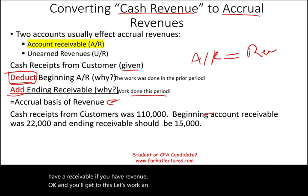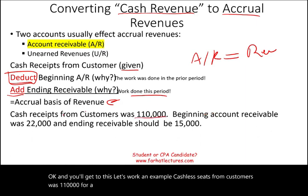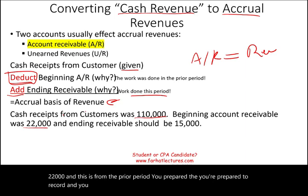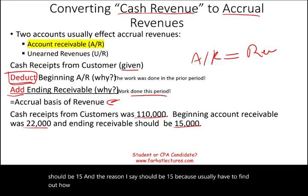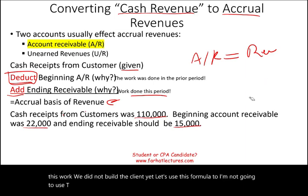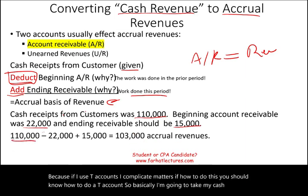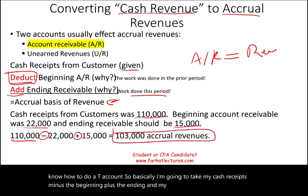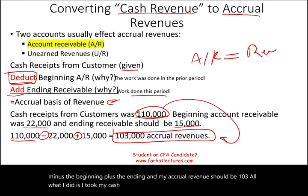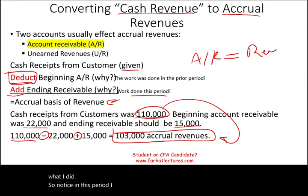Let's work an example. Cash receipts from customers was $110,000 for a particular doctor for a quarter. Beginning accounts receivable was $22,000 from the prior period. Ending receivable should be $15,000. Using the formula — cash receipts minus beginning receivable plus ending receivable — my accrual revenue should be $103,000. All I did was take my cash receipts and convert them into accrual revenue. Notice in this period I received more cash than I billed the client, because my beginning AR was $22,000 and my ending is $15,000.